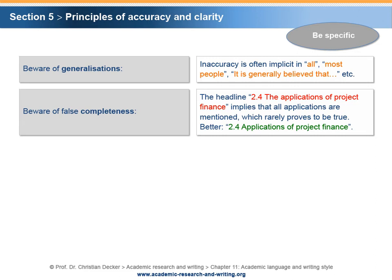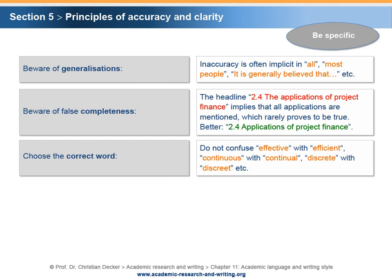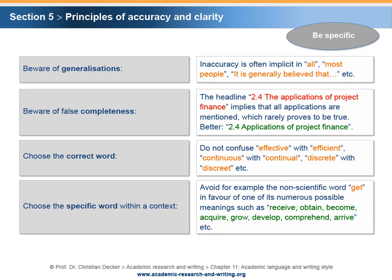Similar sounding words often have a different meaning — make sure to choose the correct word. For example, do not confuse the adjectives 'effective' and 'efficient,' 'continuous' and 'continual,' as well as 'discrete' and 'discreet.' Accurate, clear writing also means using the full range of vocabulary and choosing the specific, most suitable word within a context. For instance, avoid the unspecific word 'get,' which is considered inappropriate style in formal English. Replace it with one of its numerous possible synonyms such as receive, obtain, become, acquire, grow, develop, comprehend, arrive, etc., depending on the context.